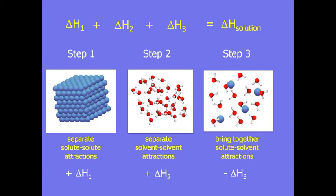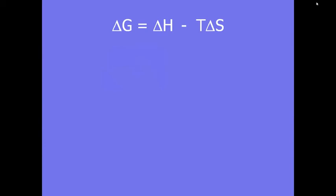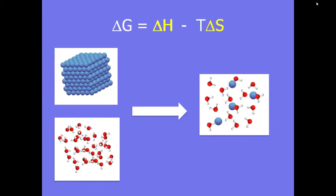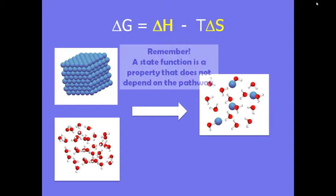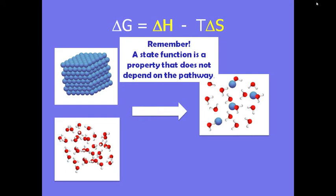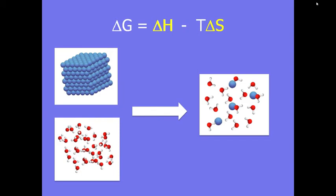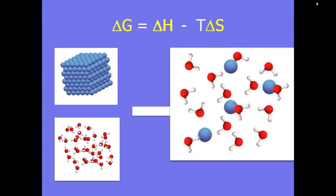Does this mean that if I create a mixture with a positive enthalpy of solution, that the solution won't form? If you said yes, then you are forgetting one very important consideration when discussing thermodynamics: entropy! Remember, the enthalpy component is only one part of determining if a reaction will happen. We also have to consider the change in entropy involved. Thinking about the before and after situation of creating our solution — which is all that matters, because changes in free energy, enthalpy, and entropy are all state functions — any time you make a solution, you increase the disorder of the system. That means the change in entropy will always be a positive value. In the end, as long as the enthalpy of solution isn't too positive, the change in free energy will still be negative and you will get your solution.